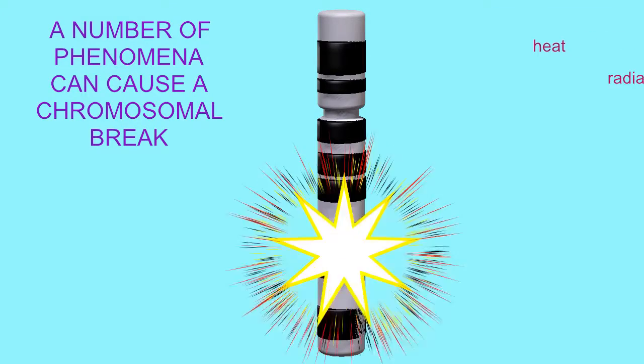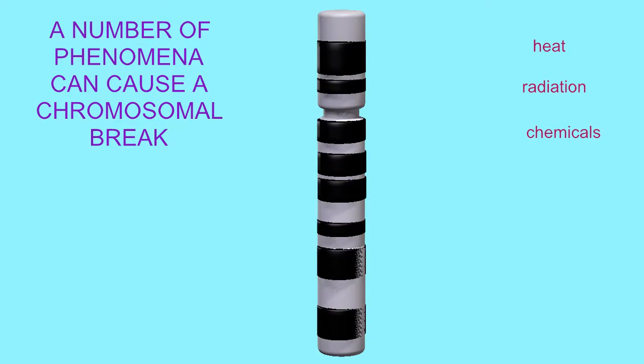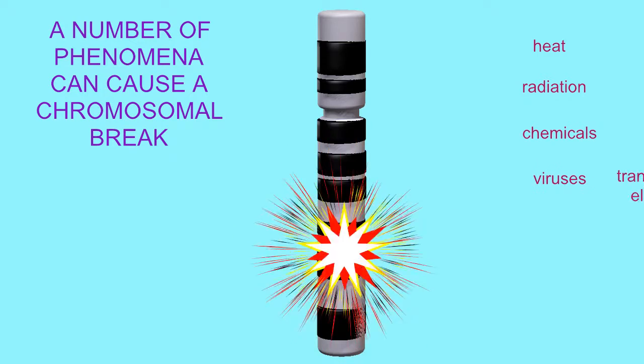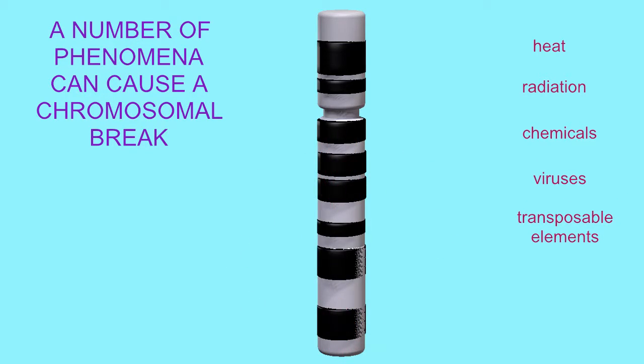The DNA of chromosomes can be broken into pieces by phenomena such as heat, radiation, viruses, chemicals, and transposable elements.